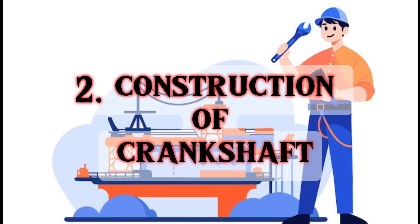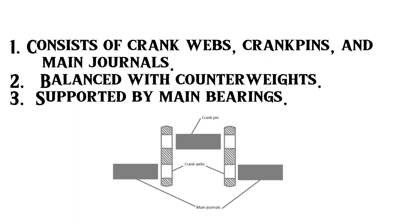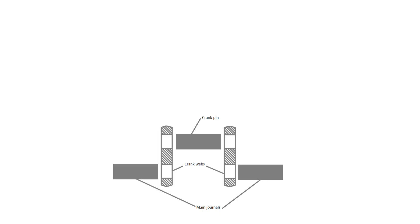Second question: Construction of crankshaft. Crankshaft consists of crank webs, crank pin, and main journals. It is balanced with counterweights and supported by main bearings.